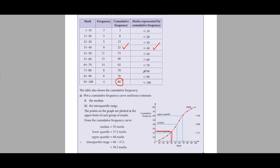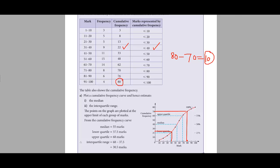Now suppose we want to find how many students got more than 80 marks — those are the A grade and A-star students. First, calculate the number of students who got 80 and less: from 80 on the x-axis, hit the graph and read off the y-axis — they are 70. Subtract 70 from the total of 80 students: 80 minus 70 equals 10. So 10 students got marks more than 80, meaning 10 students are the A grade and A-star students.